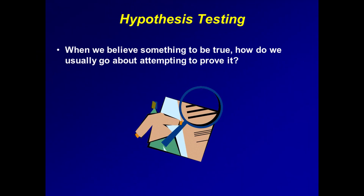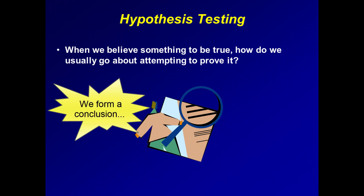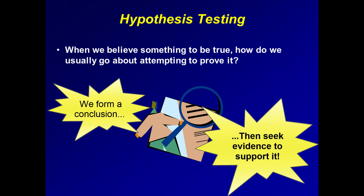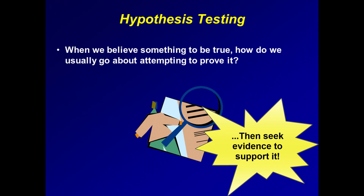When we believe something to be true, how do we usually go about attempting to prove it? For example, a few presidential elections ago, there was a widespread belief — a hypothesis — that General Colin Powell would be a candidate. All of this was evidence that the General would run. Even on a day-to-day basis, our minds are constantly weighing evidence to support our beliefs. It is a product of the human mental trait I call focusing.